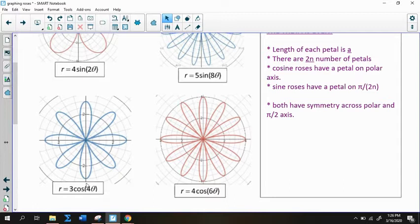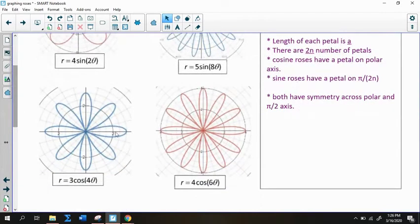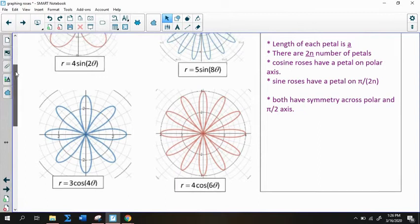And again, the length of the petal is dependent on the number out front. So this length is 3, this length is 4, and this one's length is 5. And then cosine roses always have a petal on the polar axis. So you can see there's one right here. Same thing with this one. Sine roses always have a petal, well, they basically have a petal that starts on pi divided by 2n.